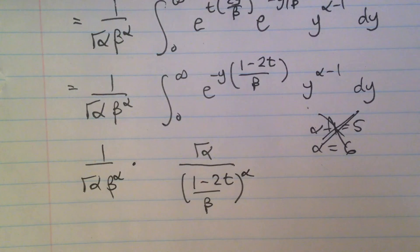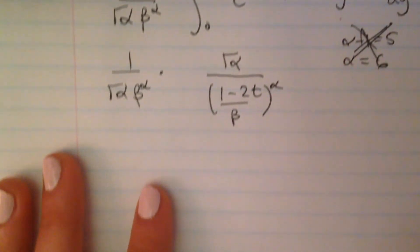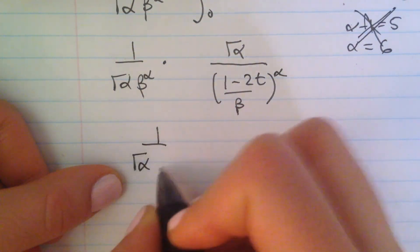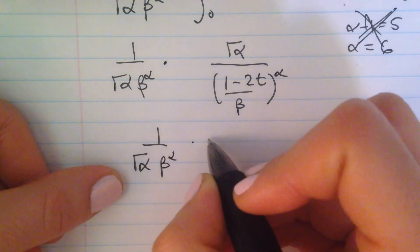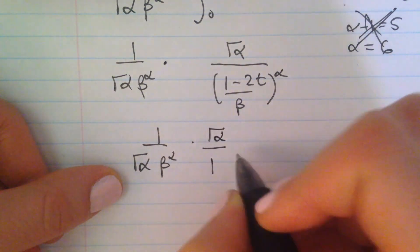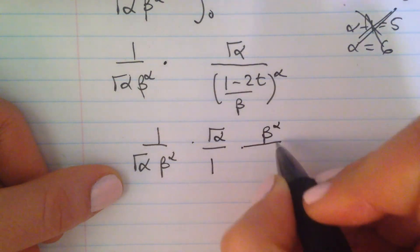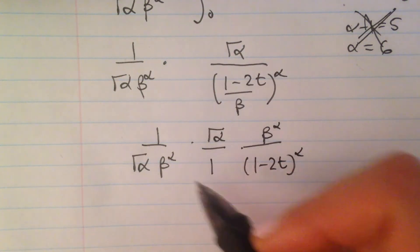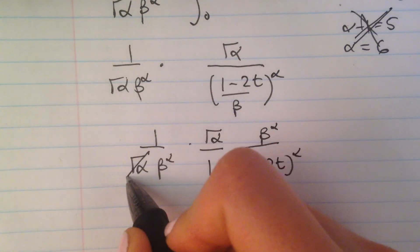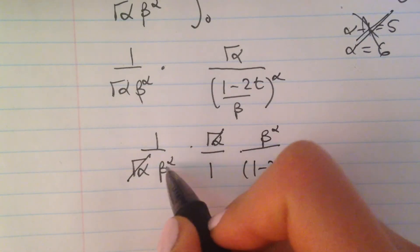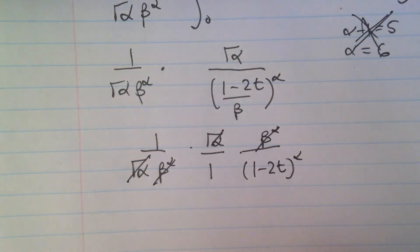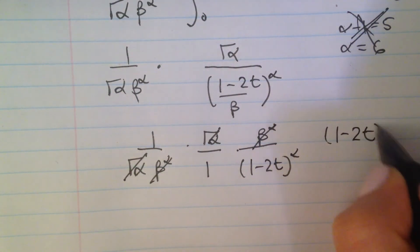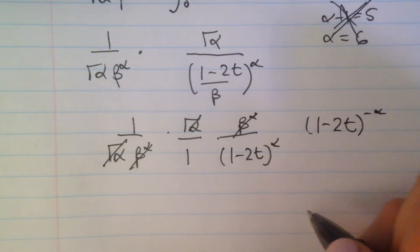I usually do like to expand this and write it out just so I don't make any mistakes and everything goes as smooth as possible. This is going to become 1 over gamma of alpha beta to the alpha times over basically 1 times beta to the alpha 1 minus 2t to the alpha. So I just wrote it out, just expanded it. And then we're going to see that this cancels out with this, and this cancels out with this. So then all we are left is 1 over this.